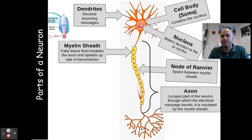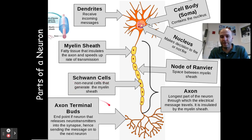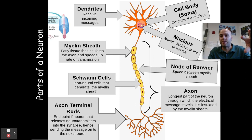The axon is insulated by the myelin sheath. It is an electrochemical message because it is like an electrical signal being sent, but the things being received and sent at the ends are chemical messengers. You have Schwann cells — little dots in the center of your myelin sheath — that help generate and maintain the myelin sheath to protect the axon and facilitate transmission. At the very end, you have axon terminals or axon terminal buds. Once the message reaches these, the neuron releases neurotransmitters into the synapse, which sends the message on to the next neuron.